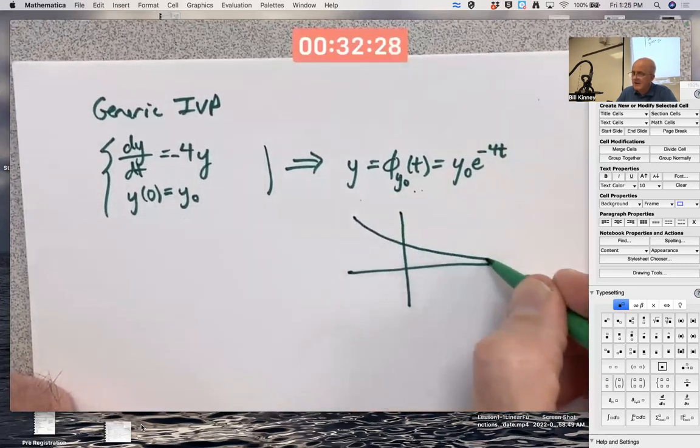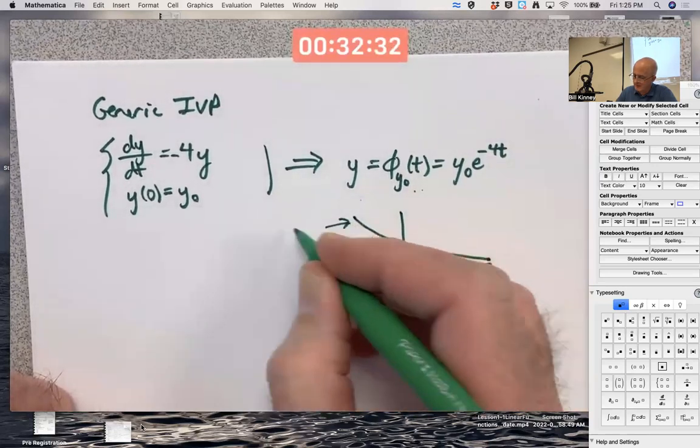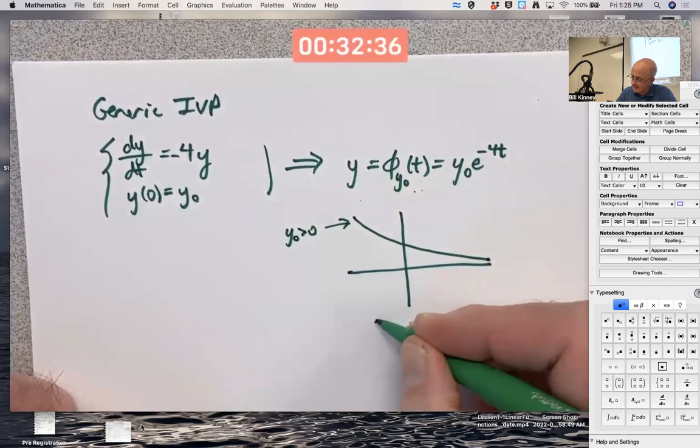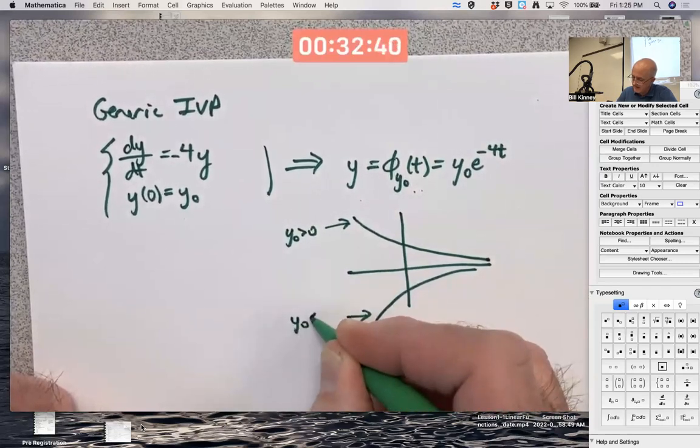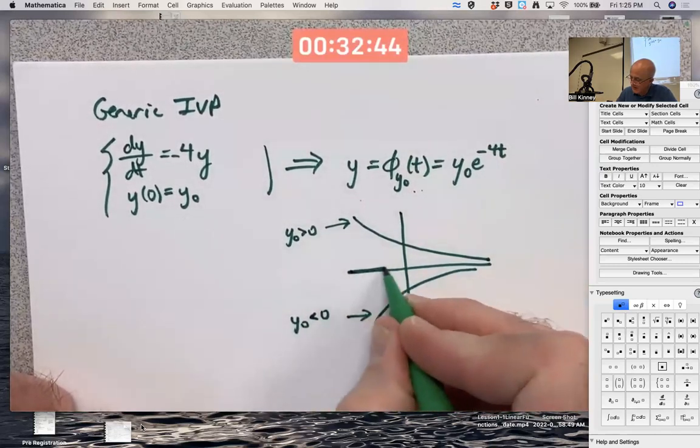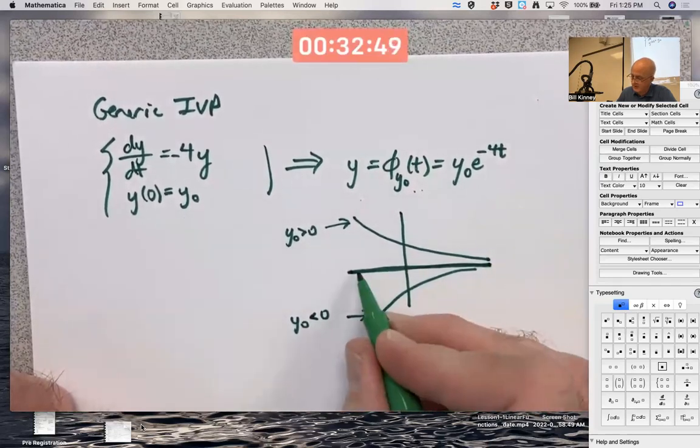If y_0 is positive, it's going to look like this. That would be what it looks like if y sub 0 is positive. But we could do it when y sub 0 is negative, and then it would look like this. That would be a different value of y_0. y_0 could also be 0. This could be the 0 function, which is an equilibrium solution of the differential equation.